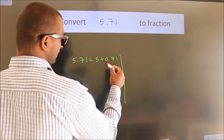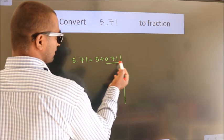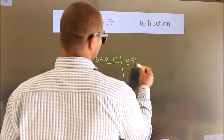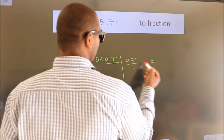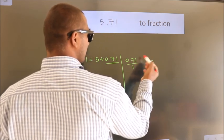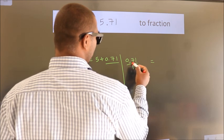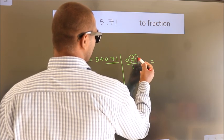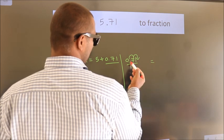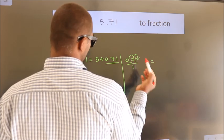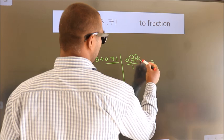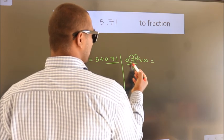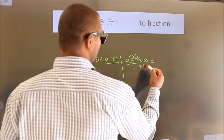Next, convert this to fraction. So 0.71 - to convert this to fraction, we have to move this decimal after 2 numbers. To move this decimal after 2 numbers, multiply it with 100. Whatever we are multiplying in the numerator, in the denominator also do the same.